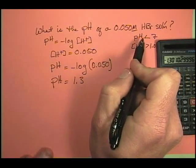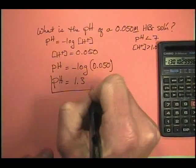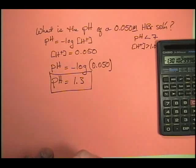Now, does that fit? Is that less than 7? Yes. Okay. So, we're set. That's a reasonable answer. It's an acid. pH of less than 7.